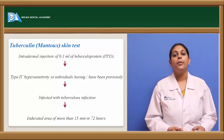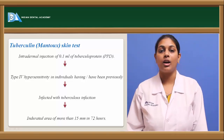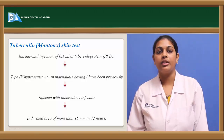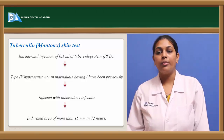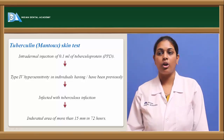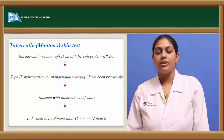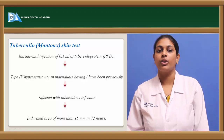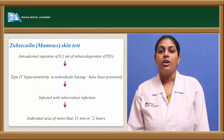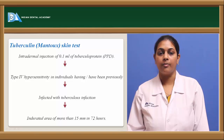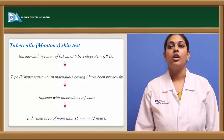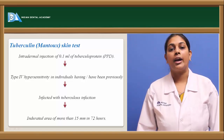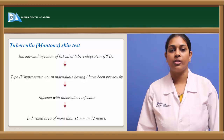The patient may show Type 4 or delayed hypersensitivity if previously infected or currently suffering from tuberculosis. Within 72 hours, the patient typically develops an indurated area measuring more than 15 mm in diameter, and the patient is said to be positive for tuberculosis. This test is most commonly used as a diagnostic aid.